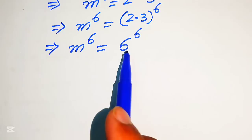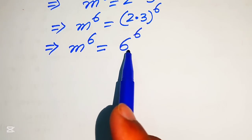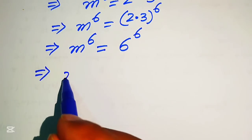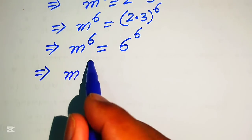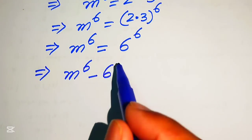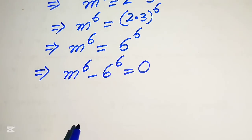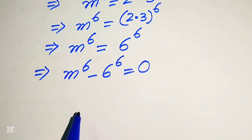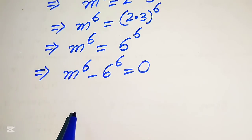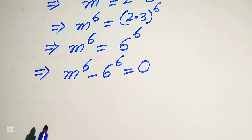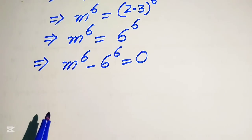We move 6 to the power of 6 to the left hand side, giving m to the power of 6 minus 6 to the power of 6 equals to 0. This is a 6th order equation, and in the next step we will find all six roots of the given equation.